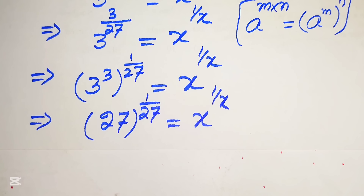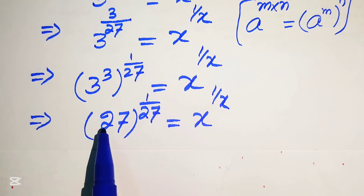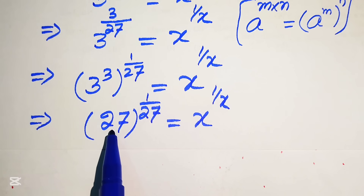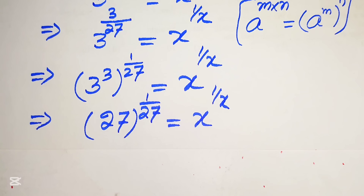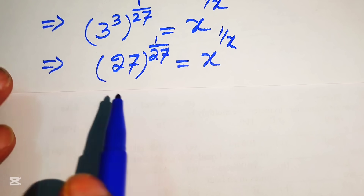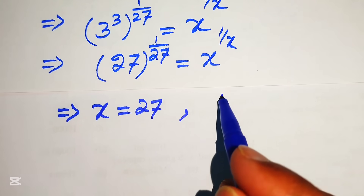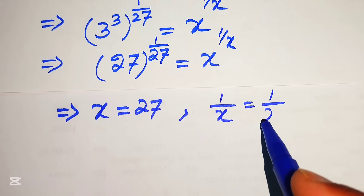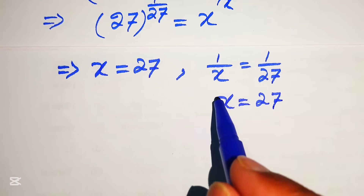Now comparing both sides, on the left we have 27 to the power of 1 over 27 — the base is 27 and its exponent is the reciprocal 1 over 27 — matching the pattern on the right, x to the power of 1 over x. Comparing bases gives x equals 27, and comparing exponents gives 1 over x equals 1 over 27. Both cases confirm x equals 27.